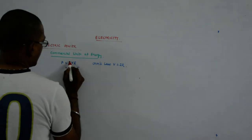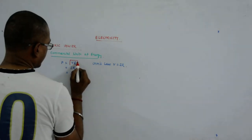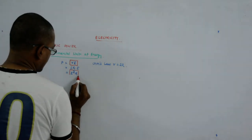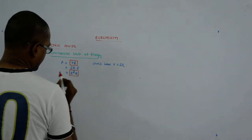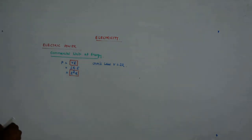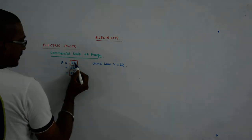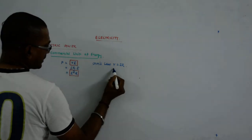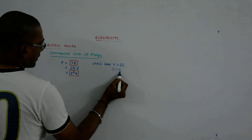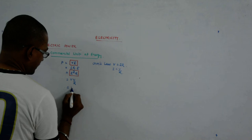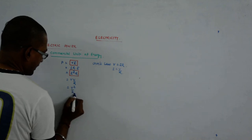So it is first of all V into I, then it is I square R. Also if I replace I as V by R, then this also becomes V into V by R, which is V square by R.